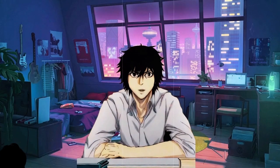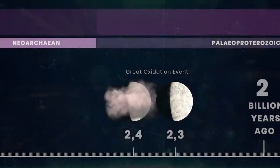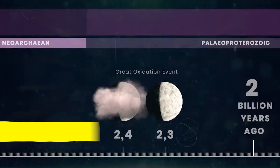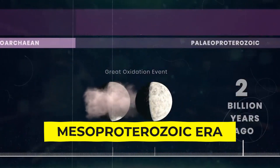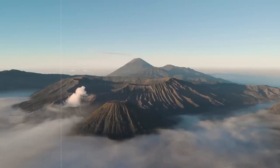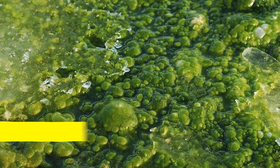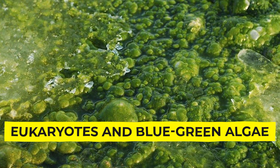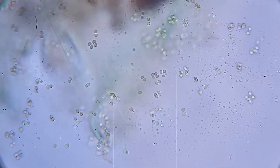However, the worst was about to come. Around 2.3 billion years ago, during the Mesoproterozoic era, Earth experienced a period of freezing, possibly as a result of the Great Oxidation Event and a decrease in volcanic activity. Over time, the ice melted, indirectly releasing more oxygen into the atmosphere. During this era, eukaryotes and blue-green algae emerged. It was also the first time that meiosis and sexual reproduction occurred in eukaryotes.